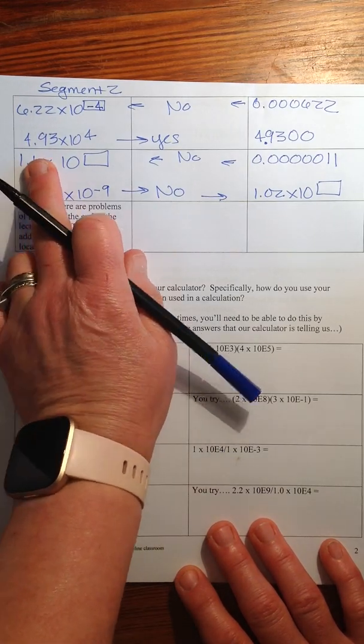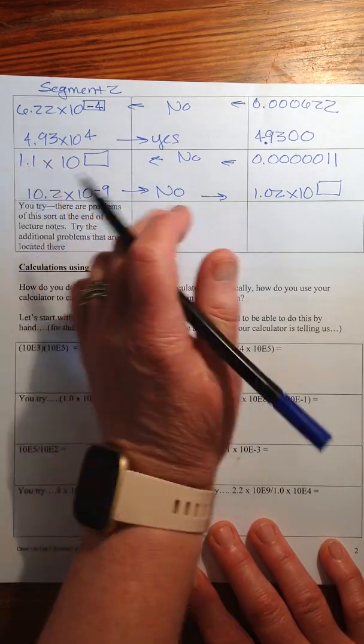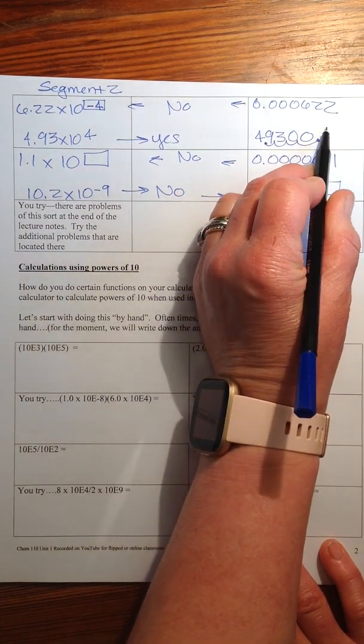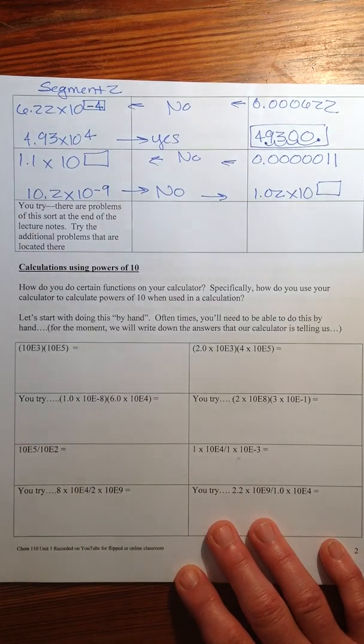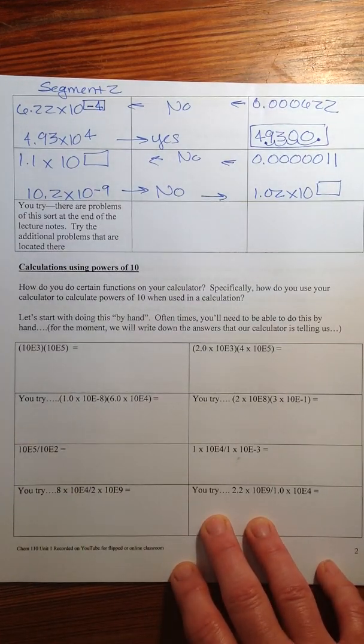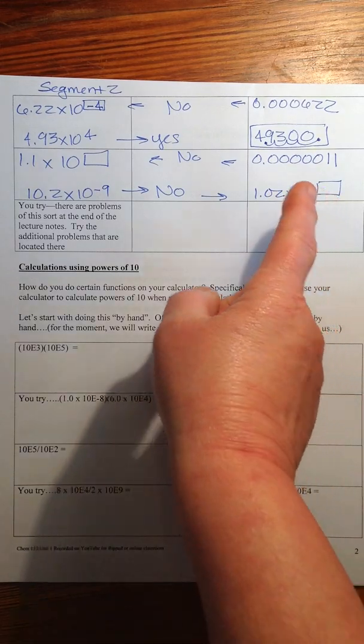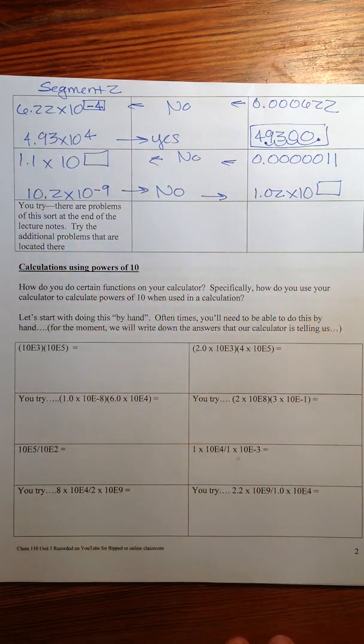This one, this is in scientific notation so you're going to move the decimal one, two, three, four places to the right and 49,300 becomes your value there. And you expect it to be a big number because this is a positive power of 10.